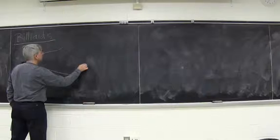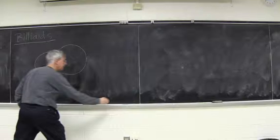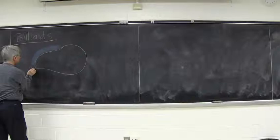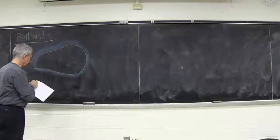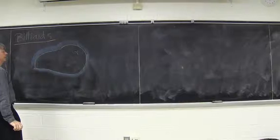So what's a billiard? Suppose we have a plane like the plane on this board, and we have a wall. We cannot penetrate this wall, so outside the wall we cannot go. And there is a domain Q, which is the billiard.